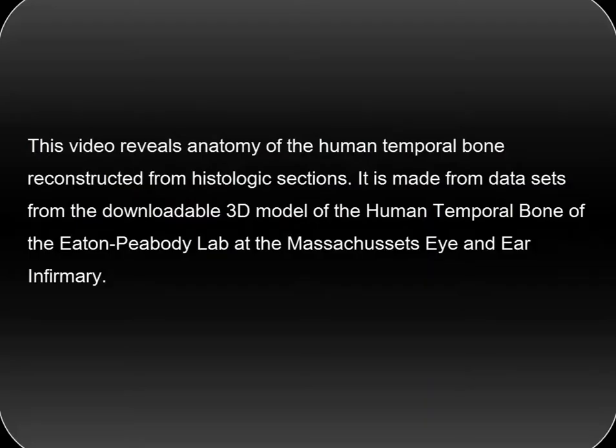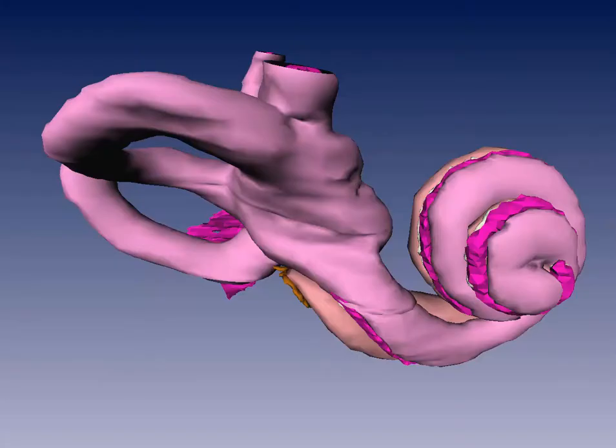This video reveals anatomy of the human temporal bone reconstructed from histologic sections. It is made from data sets from the downloadable 3D model of the human temporal bone of the Eaton Peabody Lab at the Massachusetts Eye and Ear Infirmary. We are looking at the endostial perilymph containing space of a right labyrinth.